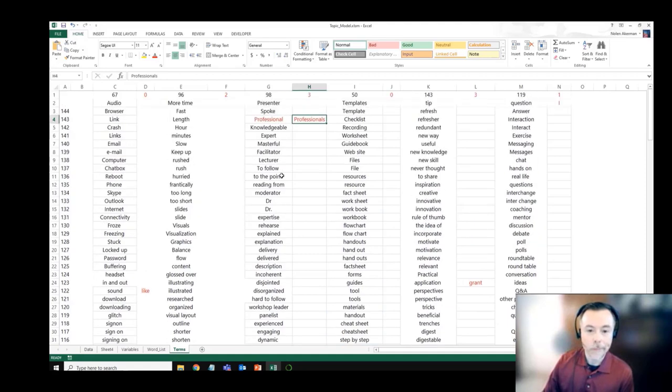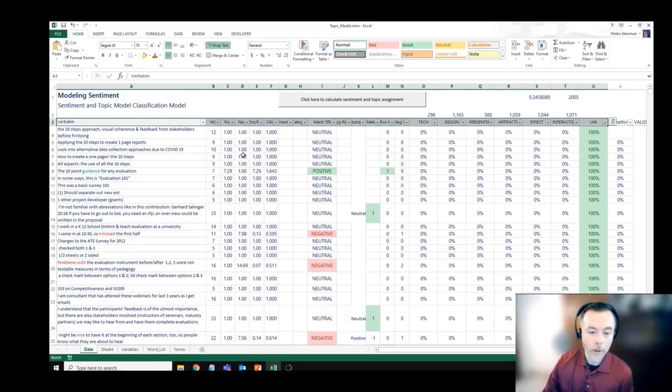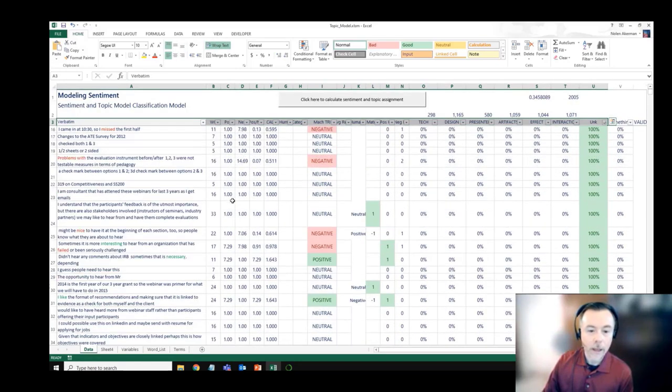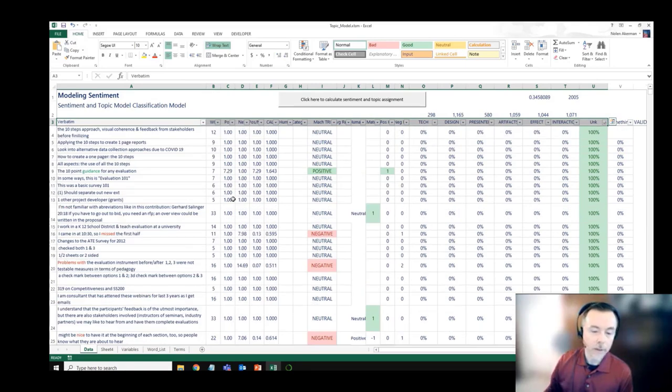We build this out in an iterative process, starting with identified words that we found in the responses. Then we run the model on our subset and identify how many items were fitting into each one of those categories. We do that until we're getting about 80% of the opinion phrases falling into one of those classifications.